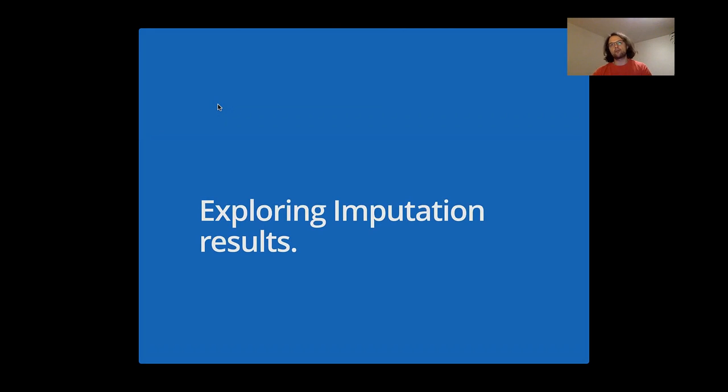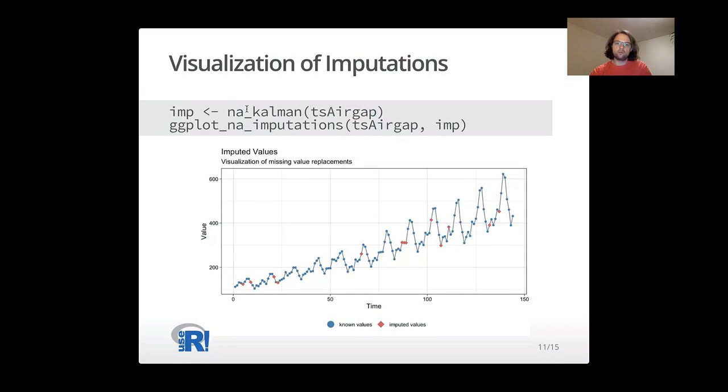And once you're done with doing your first analysis, you might want to explore your imputation results. Maybe, like here, you use the na_kalman function, which is quite an advanced imputation function. It's a Kalman smoothing and state-space models. And now you have your results. And now you want to have a look how good they are actually. So you use the ggplot_na_imputations function, which gives you a nice overview of how your imputed values fit into the time series.